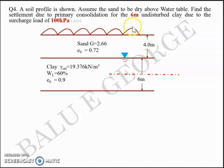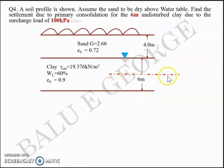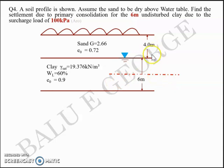When you apply a load above the sand and the clay strata, the clay strata will start to settle. Specifically, consolidation settlement is the question. The clay layer of six meter thickness will settle, and we are interested in the settlement at the mid-layer, because the top portion of the clay layer would settle greater and the bottom portion would settle with a lesser magnitude. So we take the average value at the mid thickness, which is four meters plus six divided by two — three meters from the ground level. That point is marked by a red dotted line.